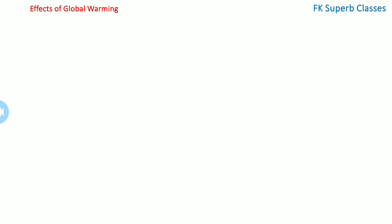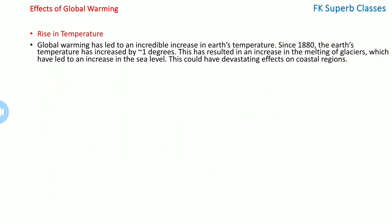Now let us look at the effects of global warming in detail. The first effect is a rise in temperature. Global warming has led to an incredible increase in earth's temperature. Since 1880, the earth's temperature has increased by one degree, which has resulted in an increase in the melting of glaciers, leading to an increase in sea levels.